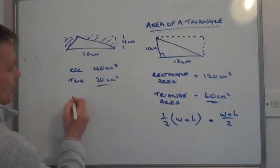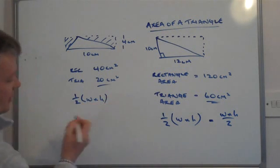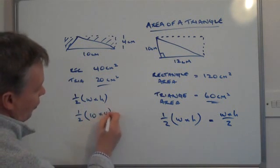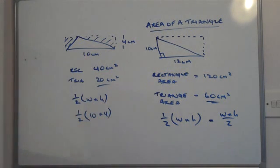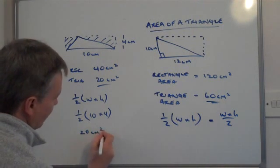Or you could use the formula, so a half width times height is the same as saying a half times 10 times 4. 10 times 4 is 40, and a half of 40 is 20 centimeters squared.